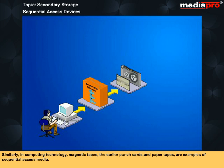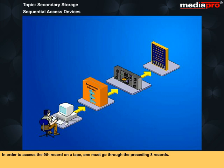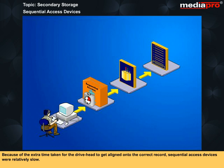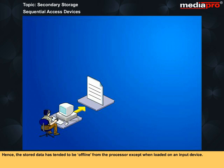In order to access the ninth record on a tape, one must go through the preceding eight records. Because of the extra time taken for the drive head to get aligned onto the correct record, sequential access devices were relatively slow. Hence, the stored data has tended to be offline from the processor except when loaded on an input device.